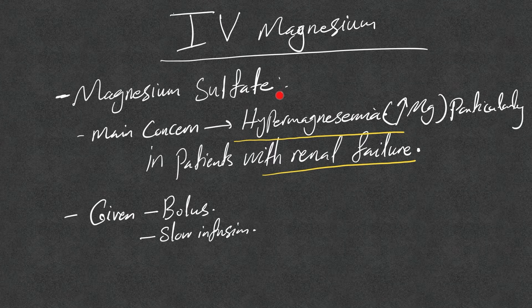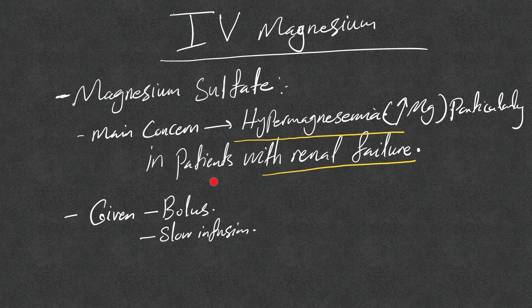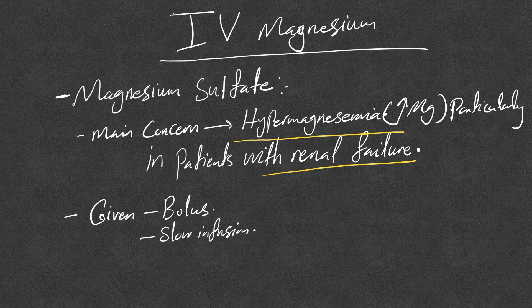In the USA we have magnesium sulfate. The main concern when we use magnesium sulfate is hypermagnesemia, elevated magnesium level, particularly if we give it to patients with renal failure. So we need close monitoring here. And the IV magnesium, unlike potassium, can be given as a bolus and can be given as slow infusion. It's much safer compared to IV potassium supplements.